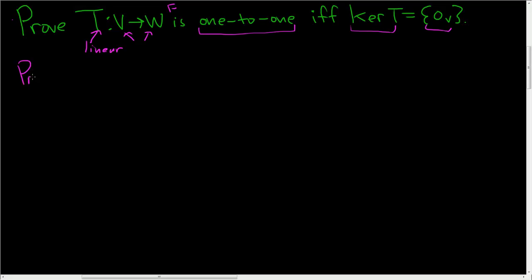So proof. We'll start by supposing that the kernel is just the set containing the zero vector. So suppose that the kernel of T is just the set containing the zero vector. So it's just the zero vector. Now we need to show that T is one-to-one.